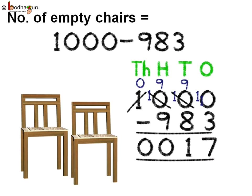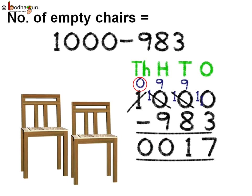Now we can subtract: 10 minus 3 is 7. Coming to the tens place, 9 minus 8 is 1. Next, hundreds place: 9 minus 9 is 0. And finally the thousands place has 0. So the answer is 17. Thus there are a total of 17 chairs which are empty.